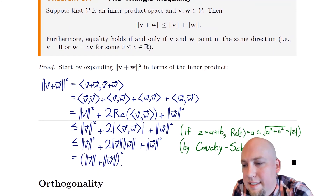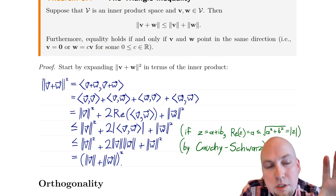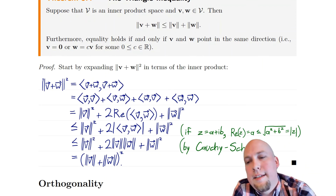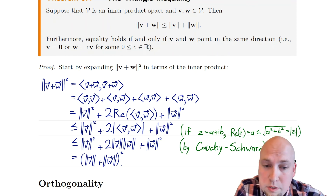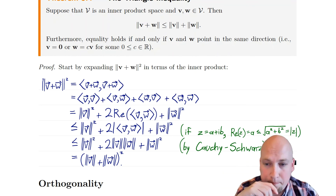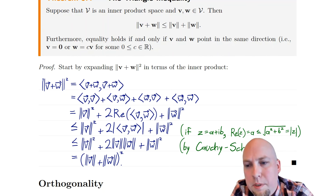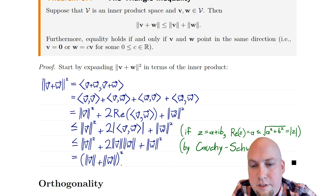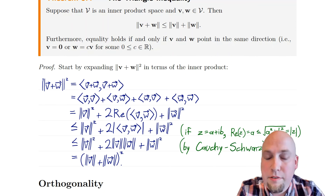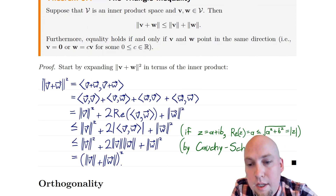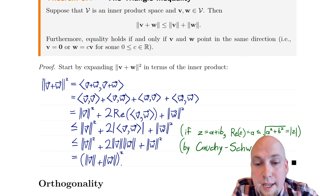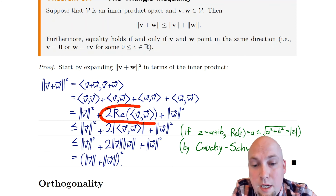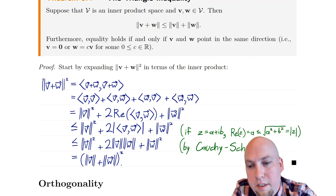The proof setup is the same as the Cauchy-Schwarz proof. We work with the norm squared to avoid square roots throughout, and square root at the end. The norm squared is just the vector inner product with itself, and expanding out gives four terms just like before. We then combine the two cross terms — they're complex conjugates, so we get double the real part. The outer terms are just norms induced by the inner product squared.